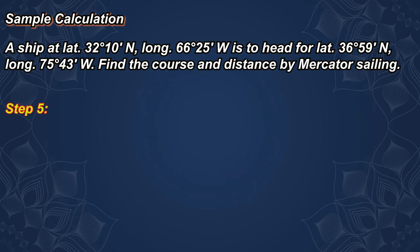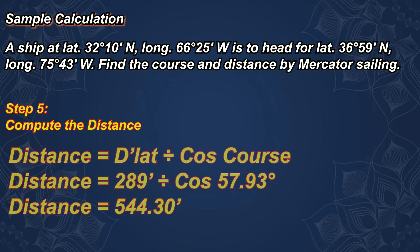Step 5: Compute the distance. Distance equals difference of latitude divided by cosine of course. 289 divided by cosine of 57.93 degrees equals 544.30 minutes. This is equivalent to 544.3 nautical miles.